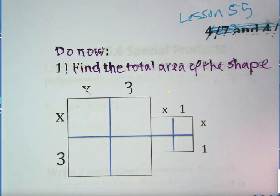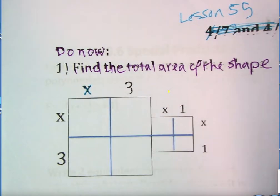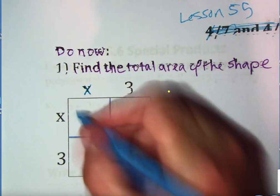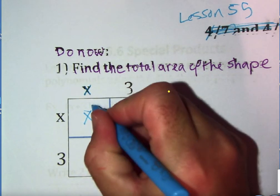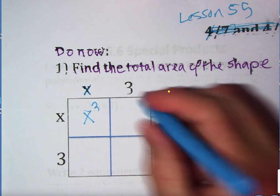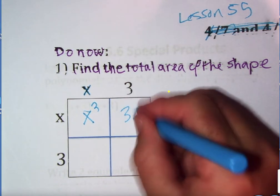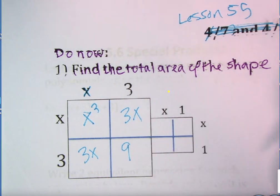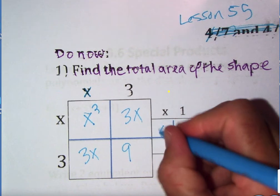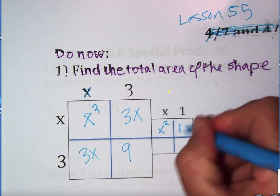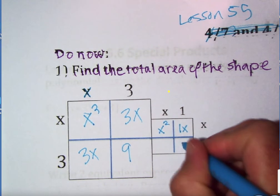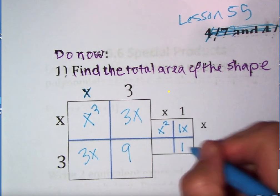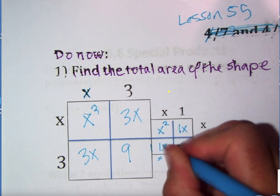We're going to find the total area of the shape. So pause me while I do this. Students would come up and say the x times x, the area of this square is x squared. The area of this other one is 3x. The area of this is 3x. The other area is 9. The area of this box is x squared. The area of this box is 1x. The area of this box is 1. And the area of this box is 1 by x, so 1x.